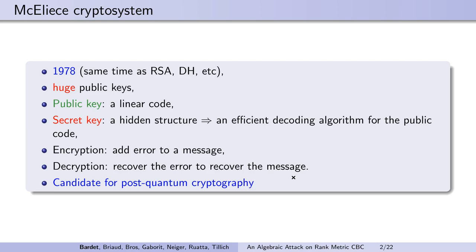The main drawback of this system is the size of the public key, which is the description of the linear code. The challenge for those systems is to reduce the size of the public key by using some structure while keeping the decoding hard.